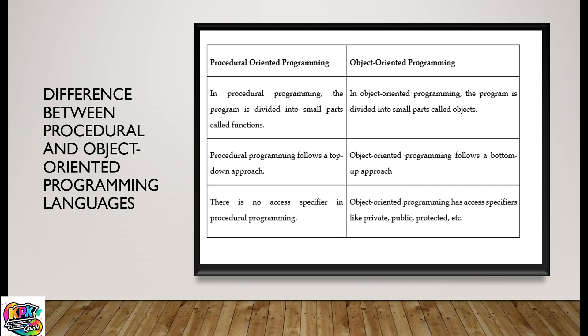Third, procedural oriented programming has no access specifiers while using the language, but object-oriented programming has access specifiers like private, public, and protected. Access specifiers help put the cap or the limitation on the kind of data that an object could access.